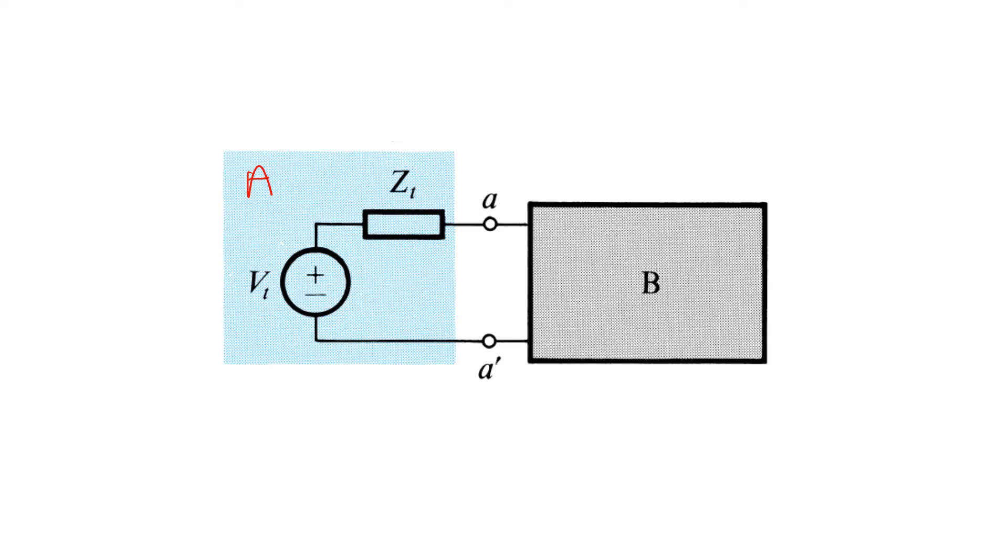That is, all the voltages and currents that we would calculate inside of B using this simplified model are the same as we would get if we analyzed the original complex circuit, including the voltages and currents at nodes A and A prime.